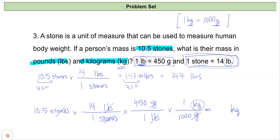Now I'll plug this into my calculator. I'll plug in 10.5 times 14 times 450 divided by 1,000. And that's going to give me my answer of 66.15 out of my calculator.